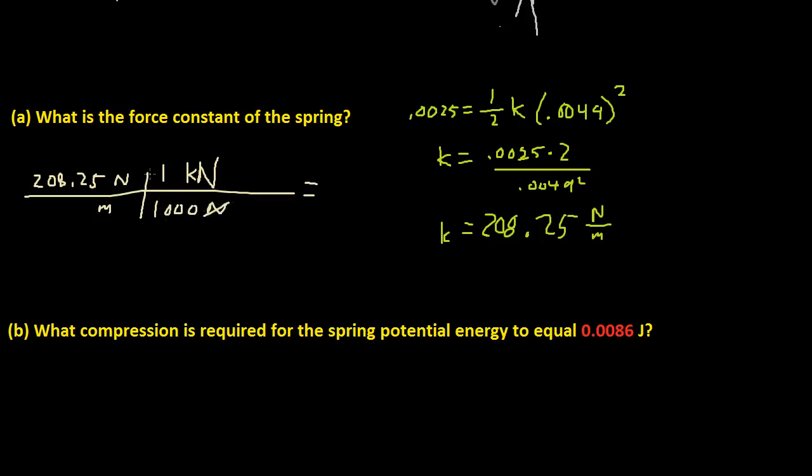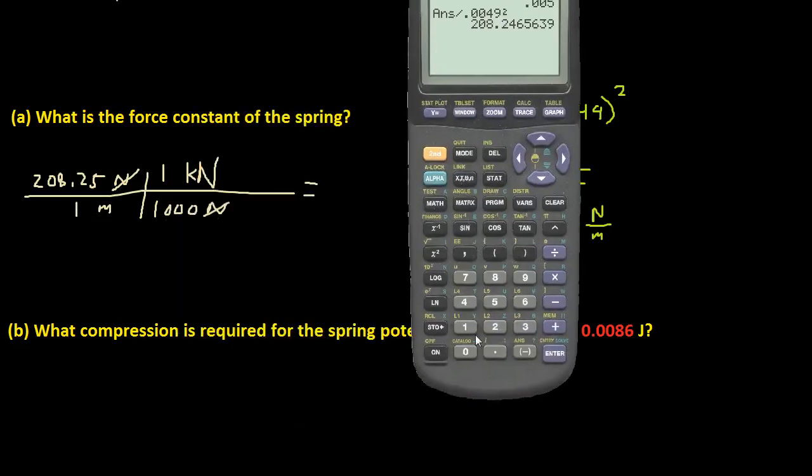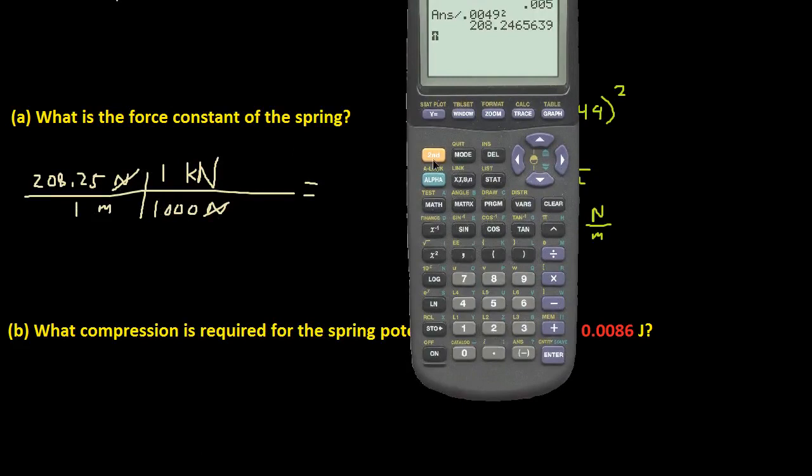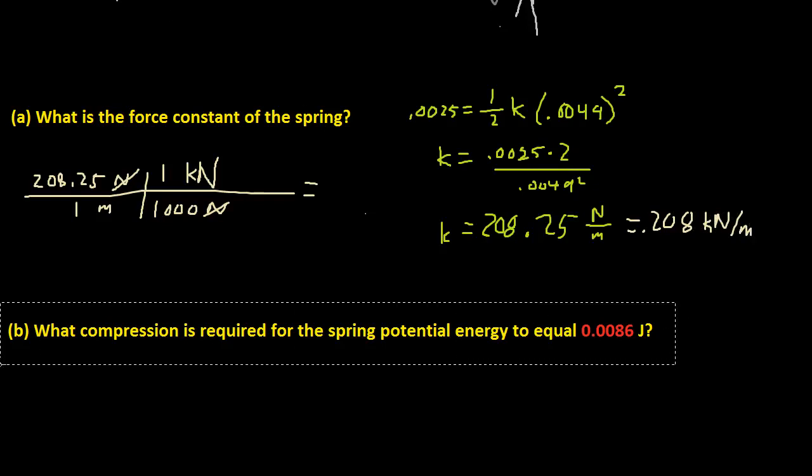So the newtons cancel out, and the meters just stay there. So this is just conversion of units. So 208.25 divided by 1,000. And we get 0.20825. So it's equal to 0.208 kilonewtons per meter. Let's move on to the next part.